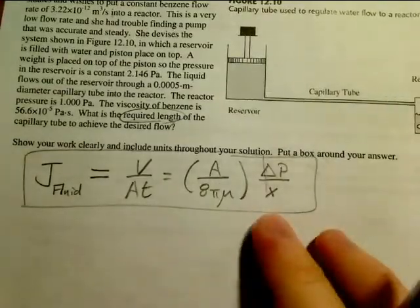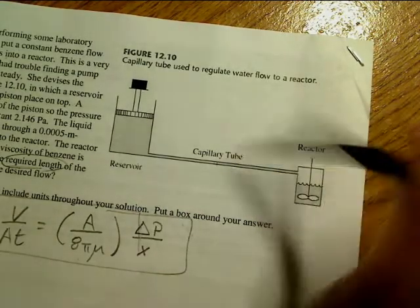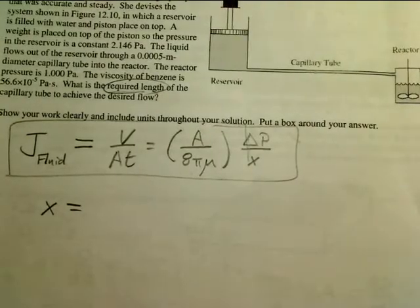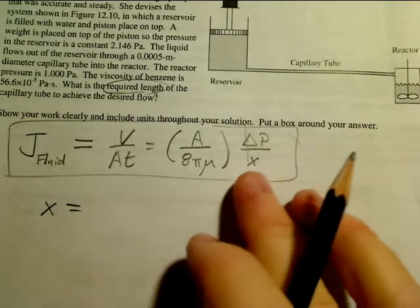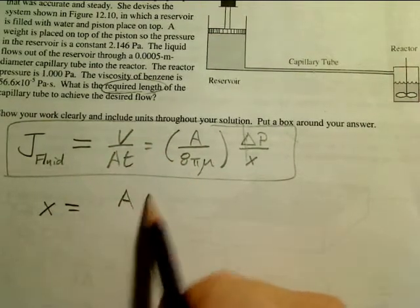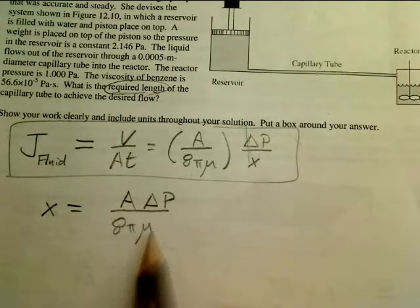So the unknown that you're looking for is the X. That's the distance over which it travels. Cross-sectional area is right there. So if you solve for X, again I'm going to do it in one step, but if you need more than one step, be sure to take your time and do that. I'm going to pull X to the other side so that I have A times delta P over 8 pi times the viscosity.